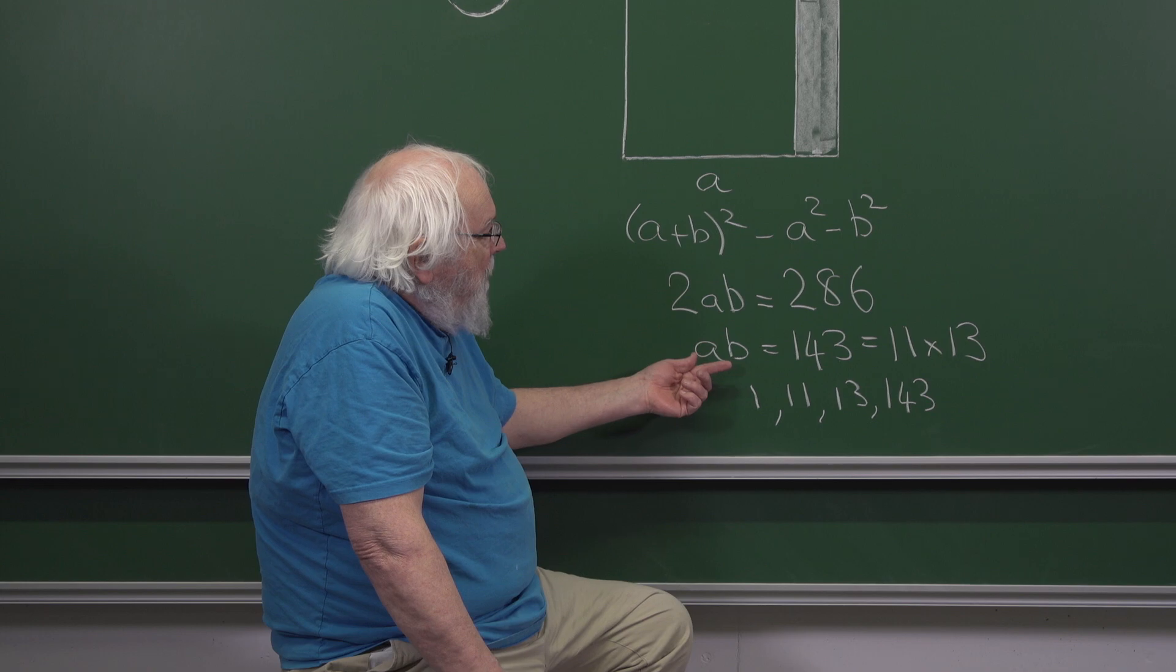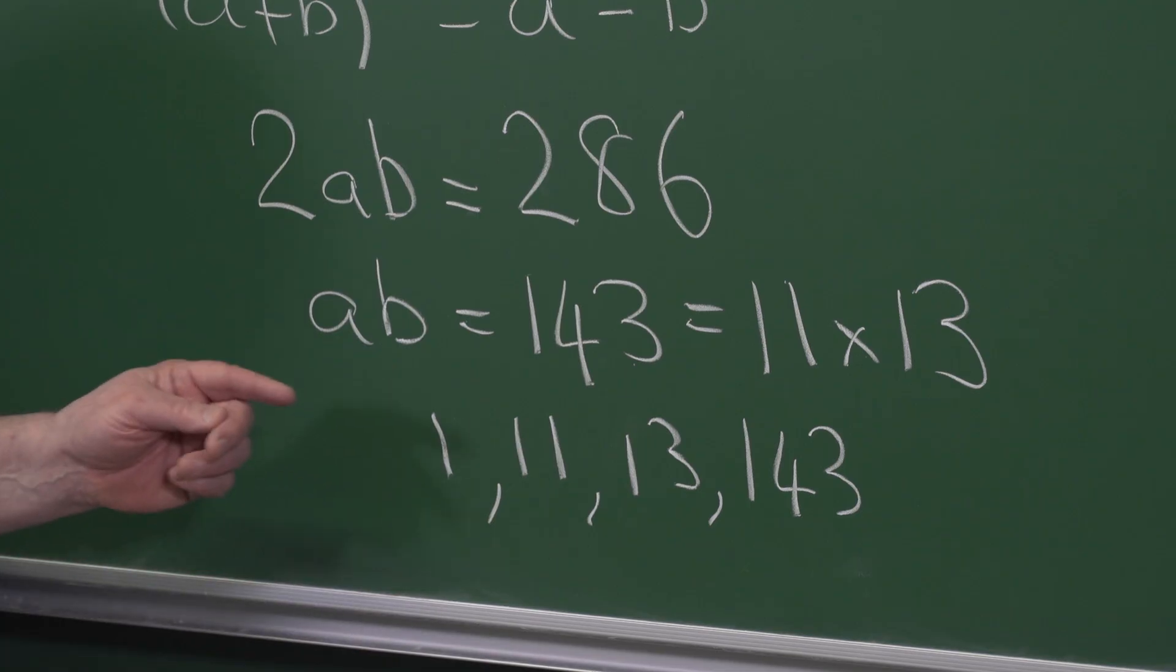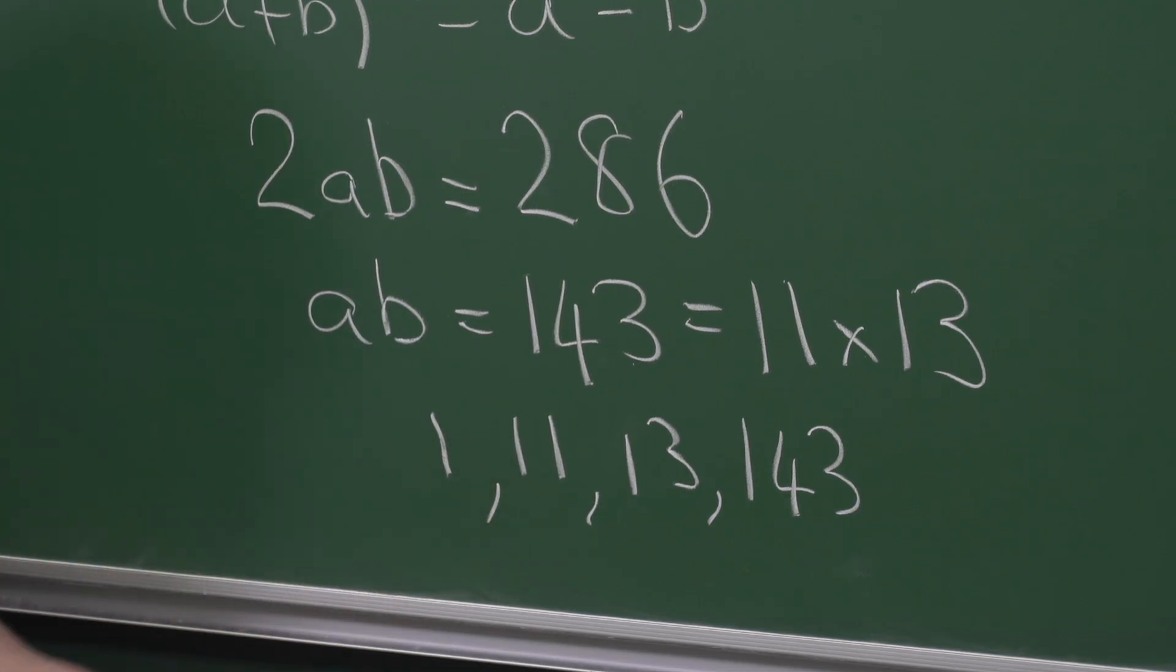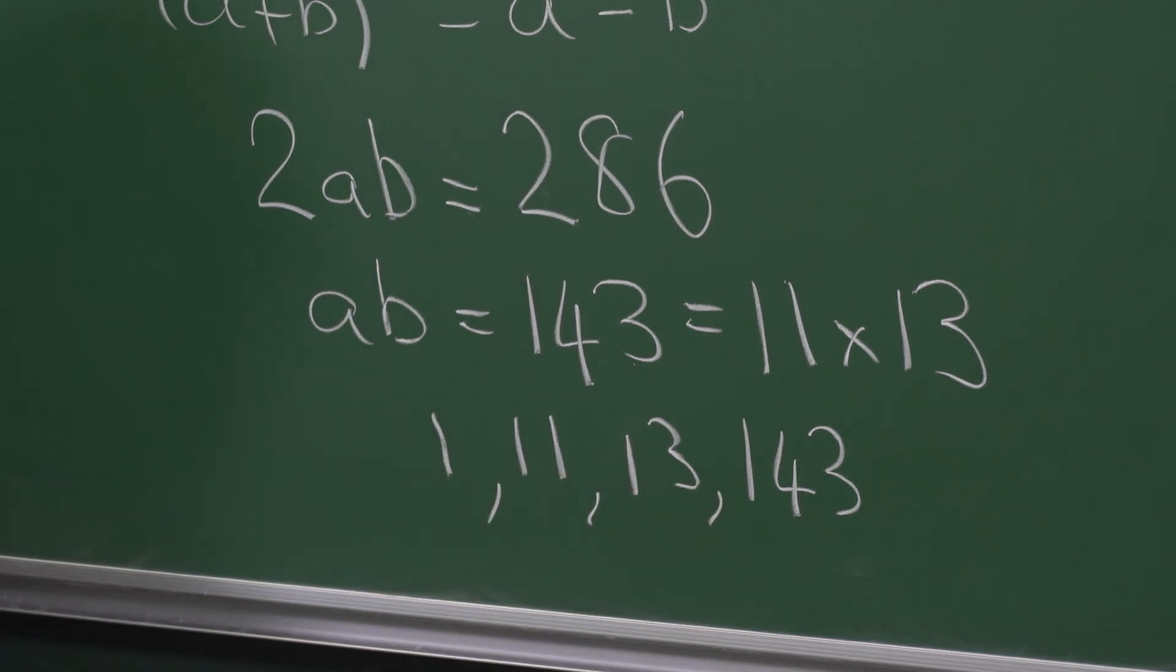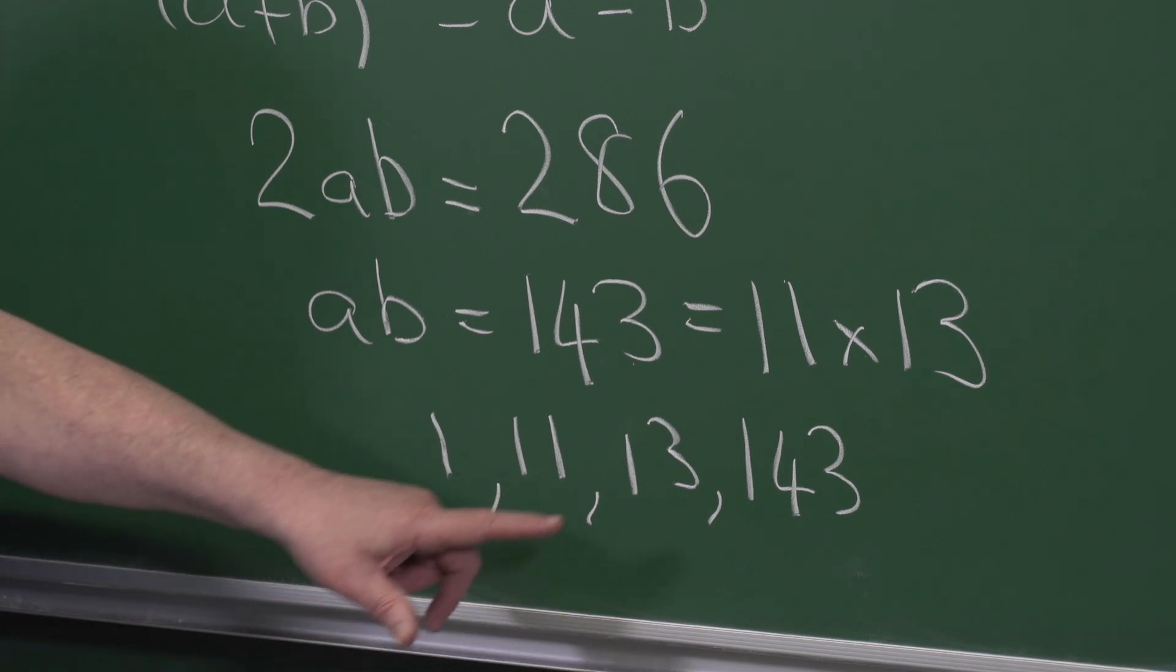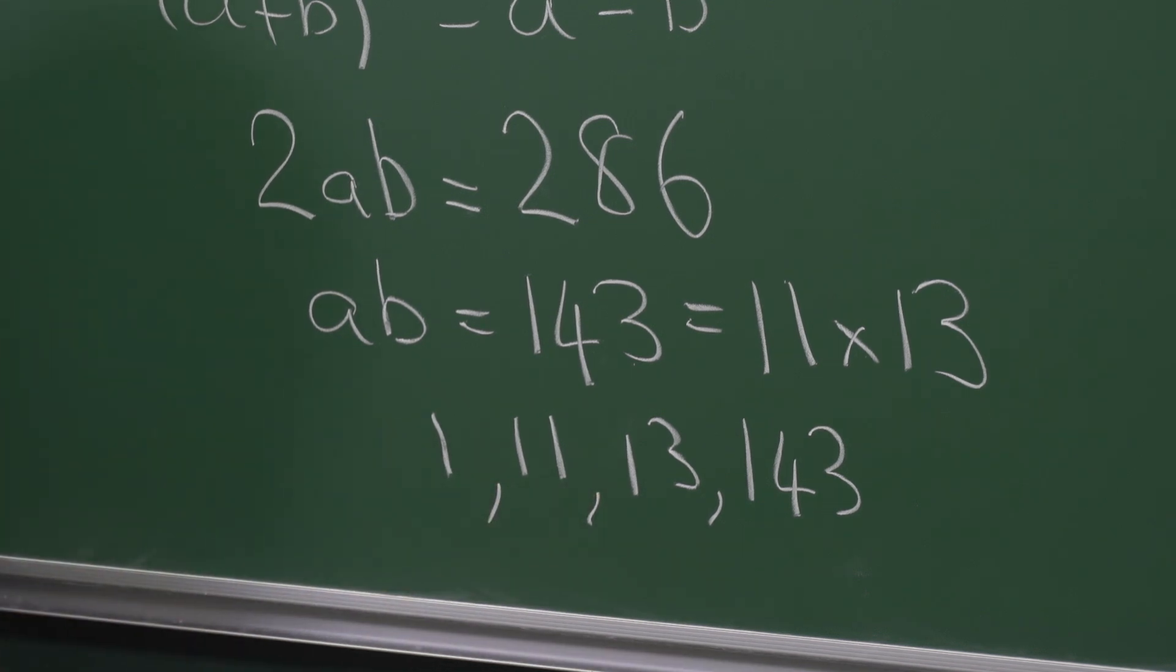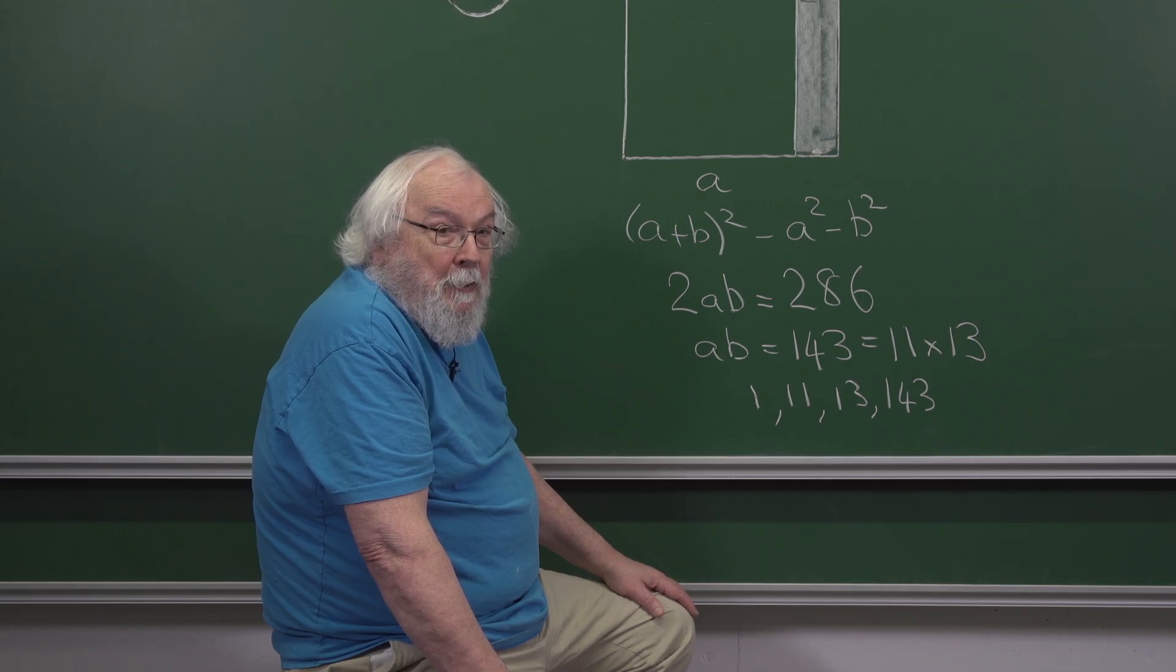So the smaller of A and B has to be 1 or 11. B has to be 1 or 11. If B is 1, then A is 143. And if B is 11, then A is 13. And we've answered all parts of the question.